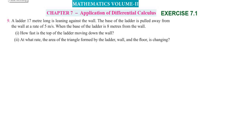Hi students, greetings from Sex Education Academy — 12th, Max Volume 2, Chapter 7, Exercise 1.1, Question Number 7. A ladder 17 meters long is leaning against the wall. The base of the ladder is pulled away from the wall at the rate of 5 meters per second. When the base of the ladder is 8 meters from the wall, how fast is the top of the ladder moving down the wall? At what rate is the area of the triangle formed by the ladder, wall, and floor changing?